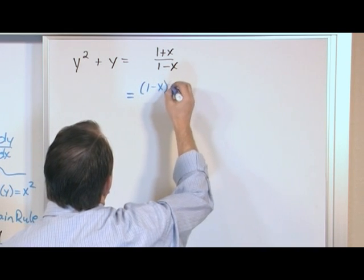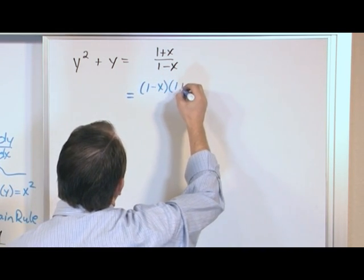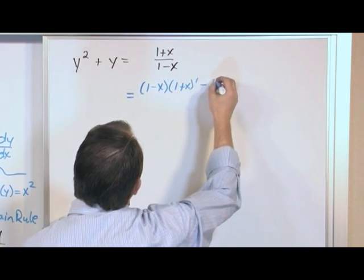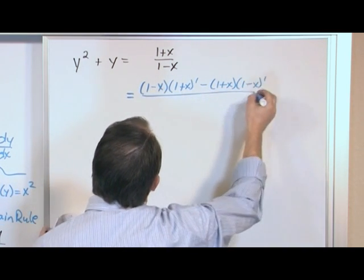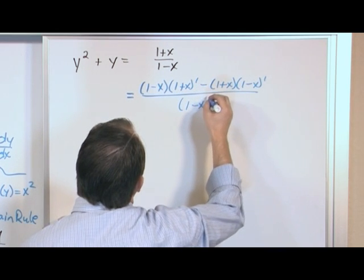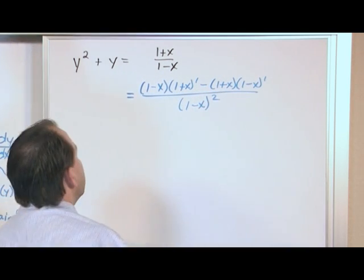So it's the bottom times the derivative of the top minus the top times the derivative of the bottom all over bottom squared.